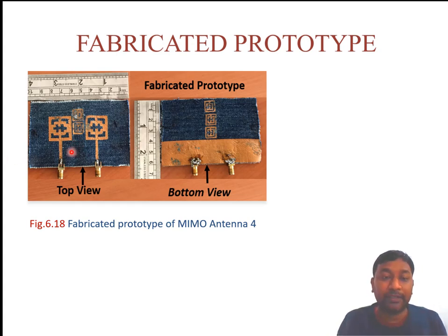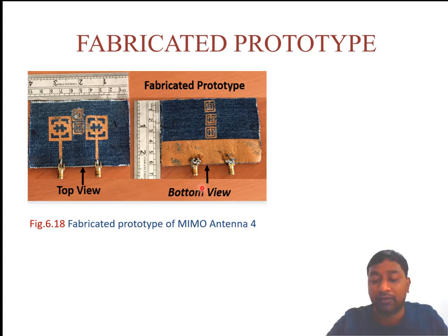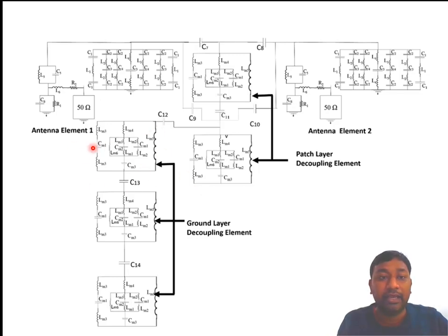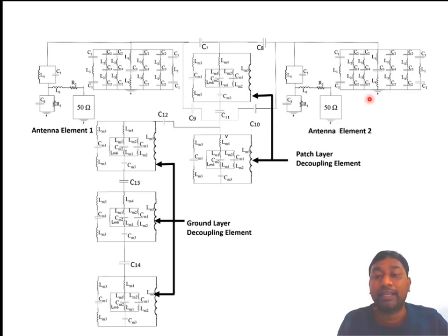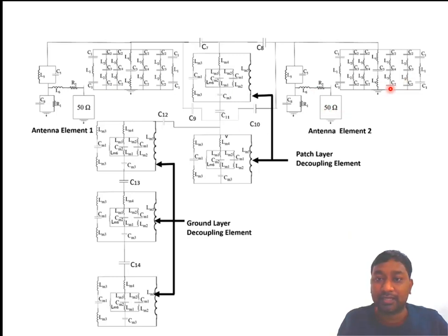For fabrication, we manually fabricated the prototype using copper tape, which is available on Amazon. After fabrication we measured it. Here we can see the top view and bottom view of the fabricated prototype. Antenna element 1 and antenna element 2 are visible. This is the equivalent circuit of the overall MIMO Antenna 4, where these two parts represent the patch layer decoupling elements, these three are the ground layer decoupling elements, and this part is used for the feeding structure. Both antennas have a similar structure.